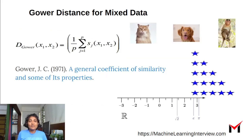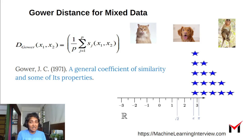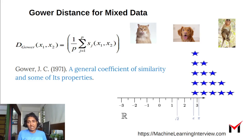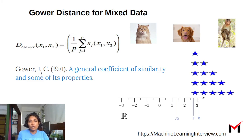To summarize, we recapped what mixed data is and saw what Gower distance is for mixed data. The Gower distance computes feature-wise distances depending on the data type for each feature, then aggregates them to get the overall distance between two data points as a distance matrix. This matrix can be used in ML algorithms and other data science applications. If you want to look at the original paper, you can go back to the 1971 paper by Gower. Hope you use Gower's distance soon in your projects!